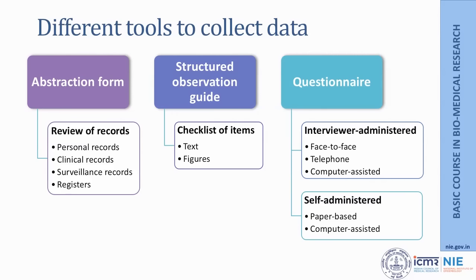Now, how do we collect data on all these different kinds of information? For this purpose, we can make use of a variety of tools depending on what kind of data we would like to collect. One, we have what are called data abstraction forms, which is basically doing a review of records of the study participants. These could be their personal records, clinical records for disease conditions, signs and symptoms, and treatment given. We could also look at data collected through disease surveillance and registers, and all of this information can be extracted into a data abstraction form.